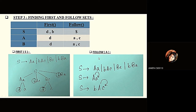To calculate Follow(A), we find every production where variable A appears on the right-hand side. There are two productions with A on the right side: S gives A and small-a, and the second one. In both cases A is followed by terminal 'a' and terminal 'c' respectively. So both terminals will be present in Follow(A), giving us Follow(A) = {a, c}.